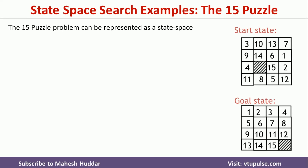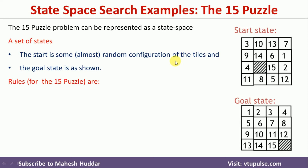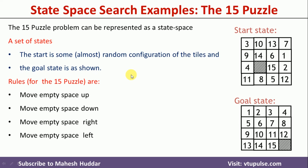Now we will take one more example: the 15-puzzle problem. This can also be represented in a state space. The start state is some random configuration of tiles, as you can see here. The goal state is a specific configuration shown on screen. To go from the start state to the goal state, we apply rules: move the empty space up, move the empty space down, move the empty space right, or move the empty space left.